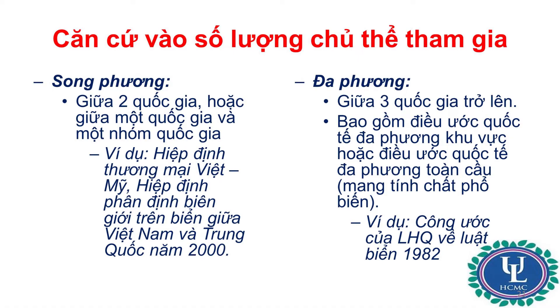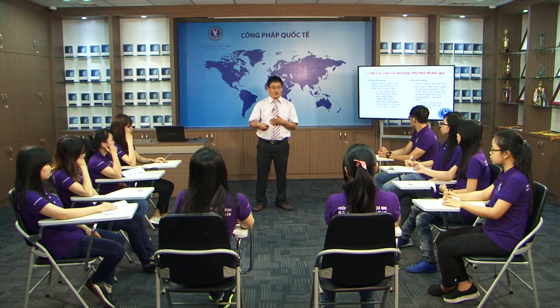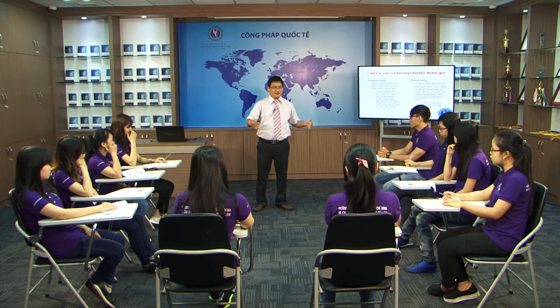Loại thứ hai là điều ước quốc tế đa phương, được ký kết giữa ba quốc gia trở lên. Điều ước đa phương có thể bao gồm những điều ước mang tính chất khu vực, chẳng hạn như các hiệp định được ký kết trong khuôn khổ ASEAN. Vào cuối năm 2015, ASEAN đã hoàn tất quá trình hình thành Cộng đồng Kinh tế ASEAN (AEC), trong đó các nước ASEAN đã ký với nhau rất nhiều hiệp định hợp tác kinh tế. Đây được gọi là điều ước quốc tế đa phương khu vực.